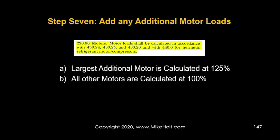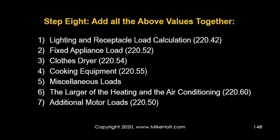Step 7: add any additional motor loads — at 125% for the largest motor, 100% for all others. Step 8: add everything together — lighting and receptacle load (derated), fixed appliance load, clothes dryer, cooking equipment, miscellaneous loads, the larger of heating or A/C, and additional motor loads. Most examples will omit steps 5 and 7, effectively working through steps 1, 2, 3, 4, and 6.